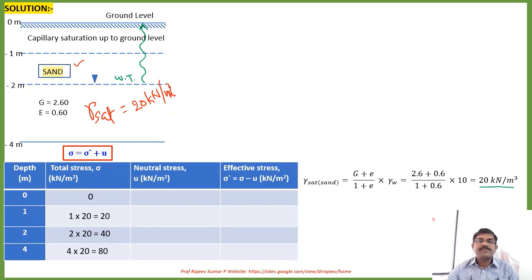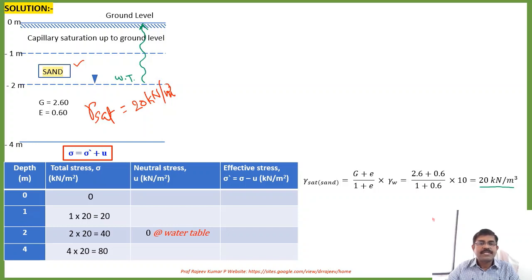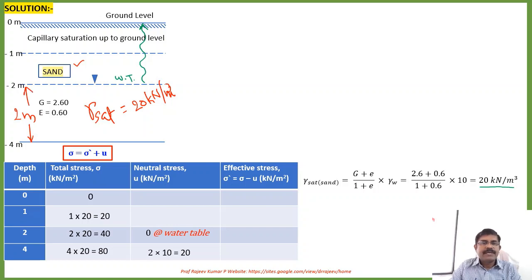In these kinds of problems, it is better to start with the water table. At the water table — which is at 2-meter depth — the neutral stress is zero, even if there is capillary rise. Below the water table at 4-meter depth, the depth below water table is 2 meters, so pore water pressure equals 2 × 10 = 20 kN/m².